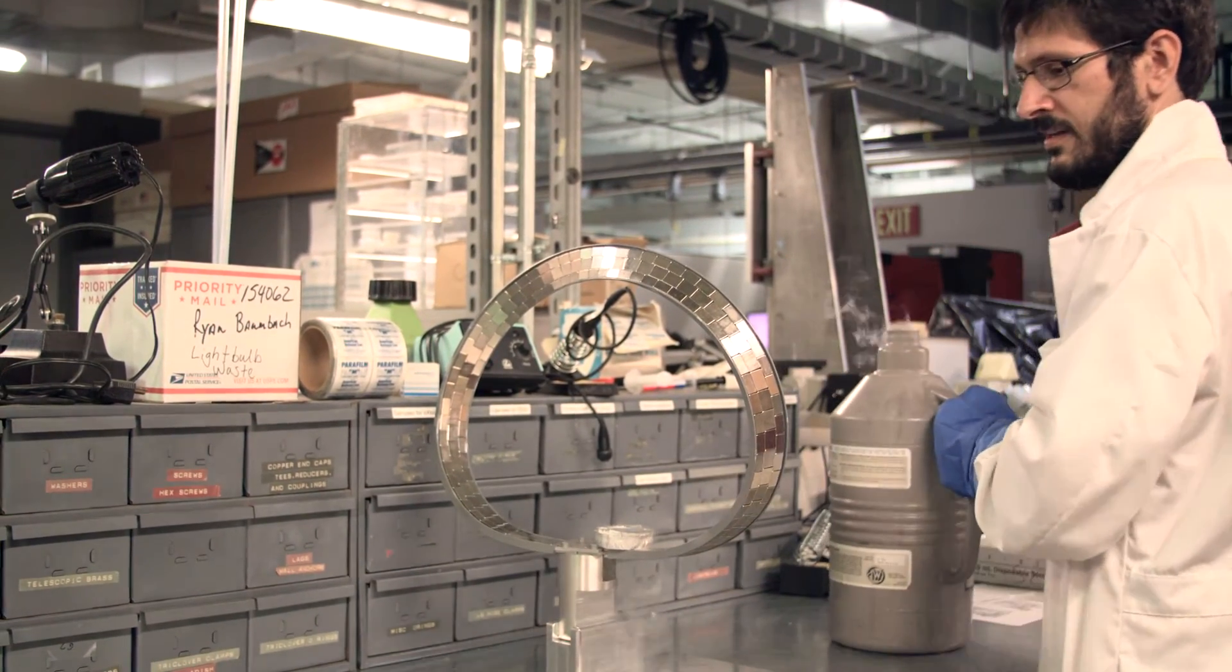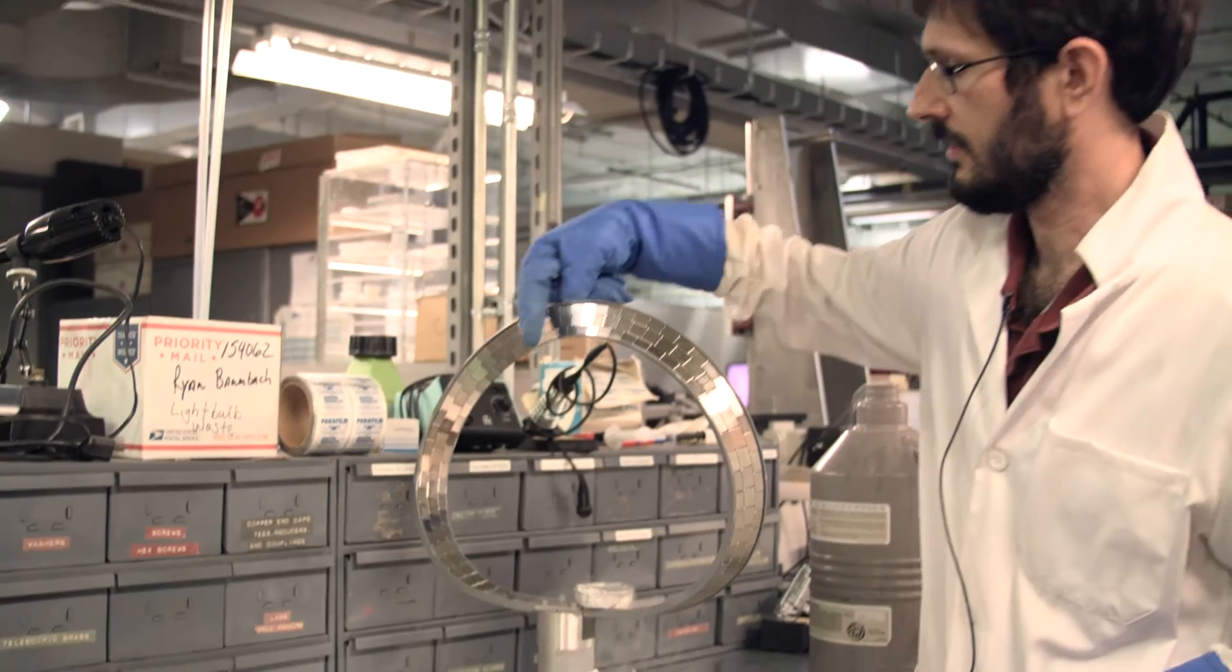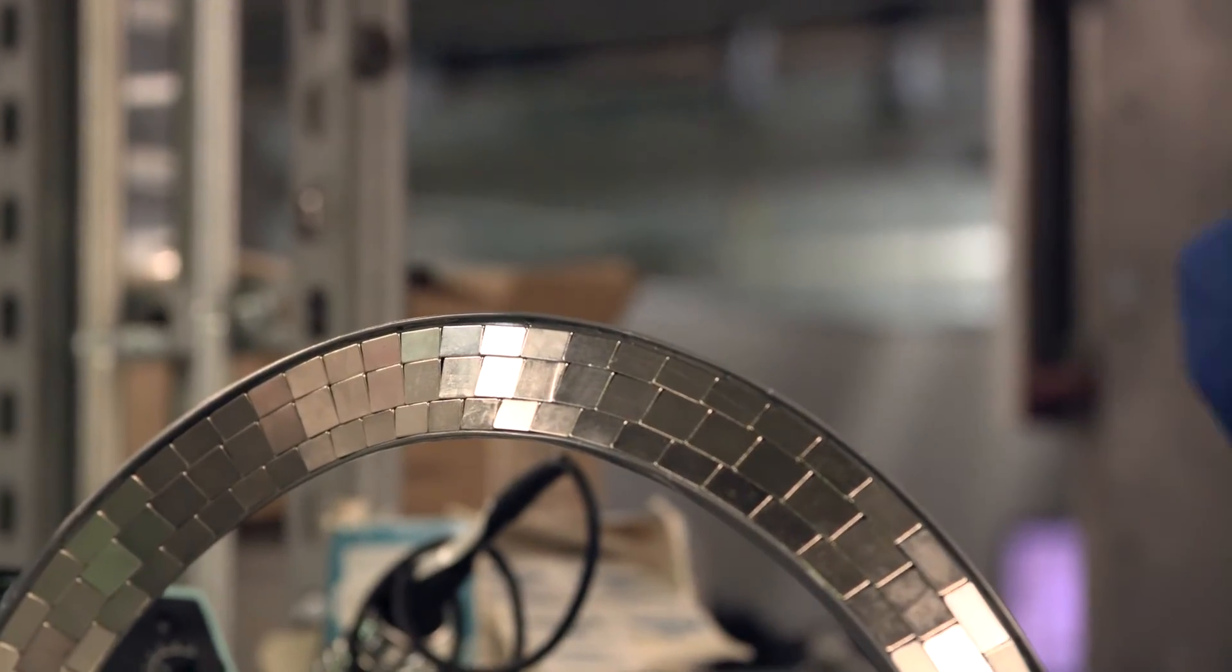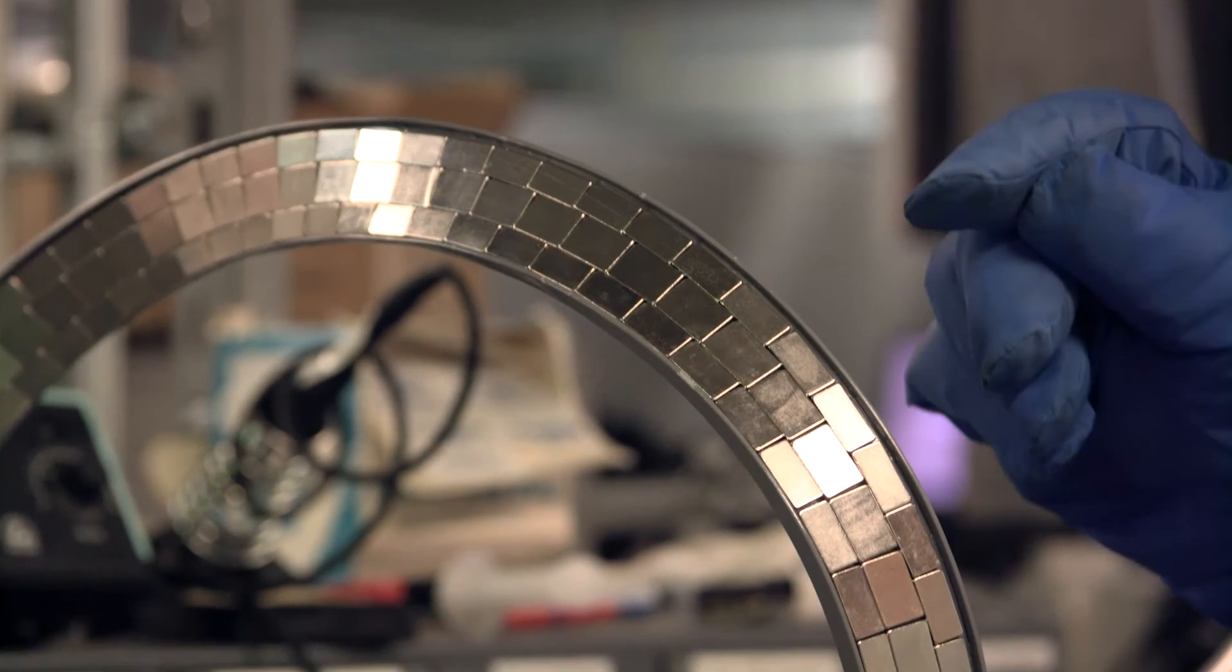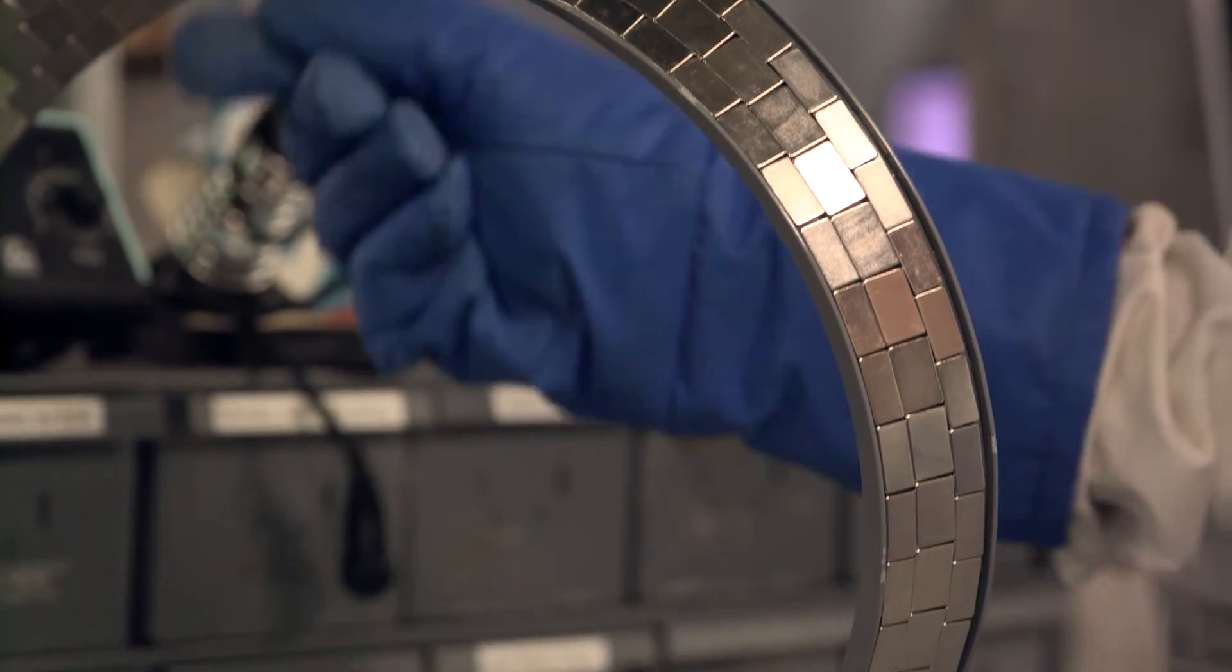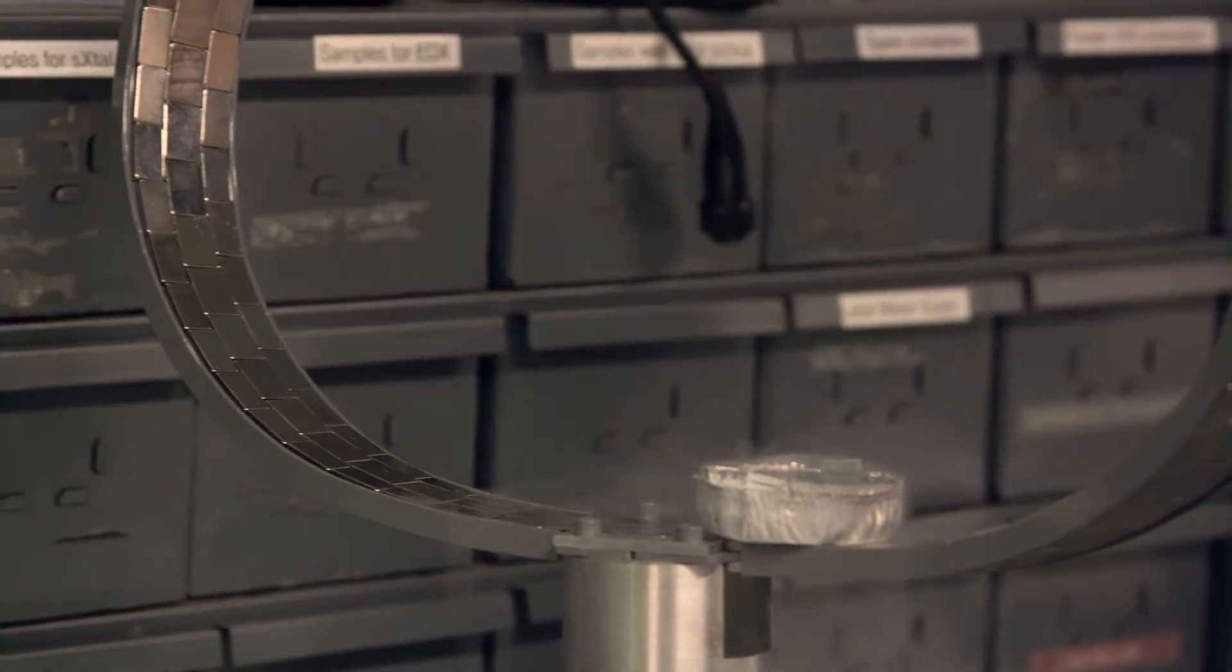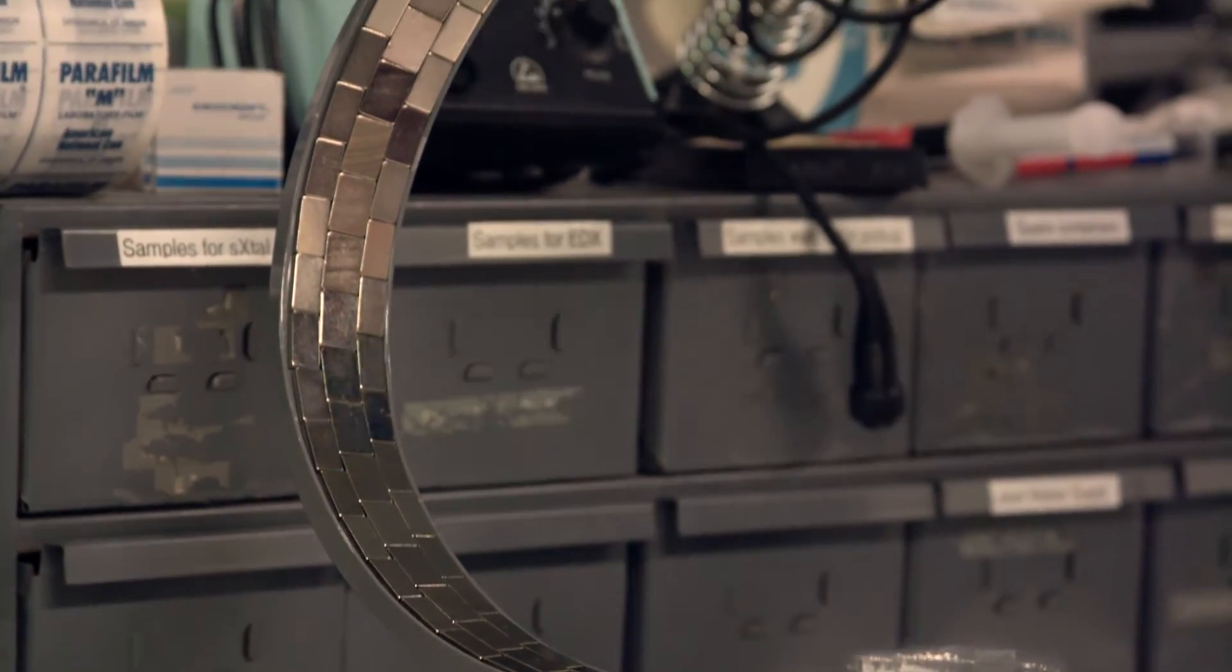So what is on this track is a bunch of rare earth magnets. And they're held in place by a twisted piece of steel. Just for fun, the name of this shape is a Mobius strip.